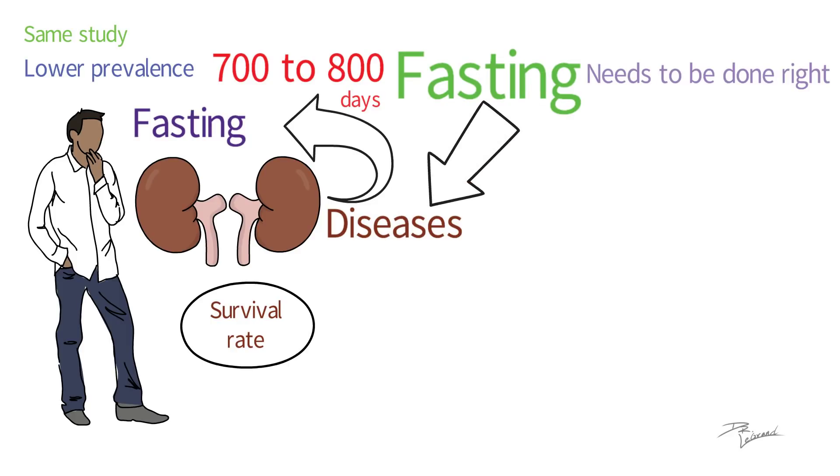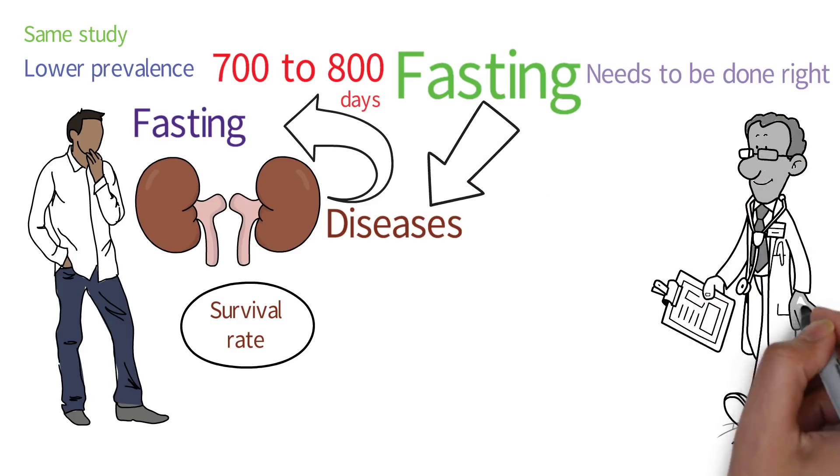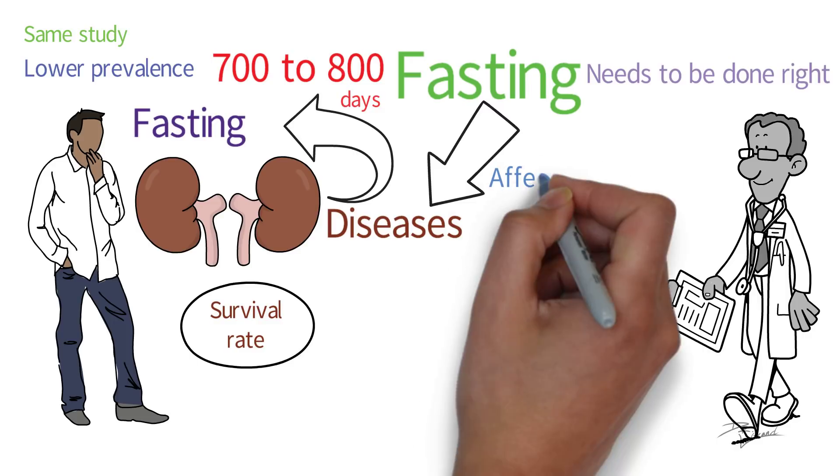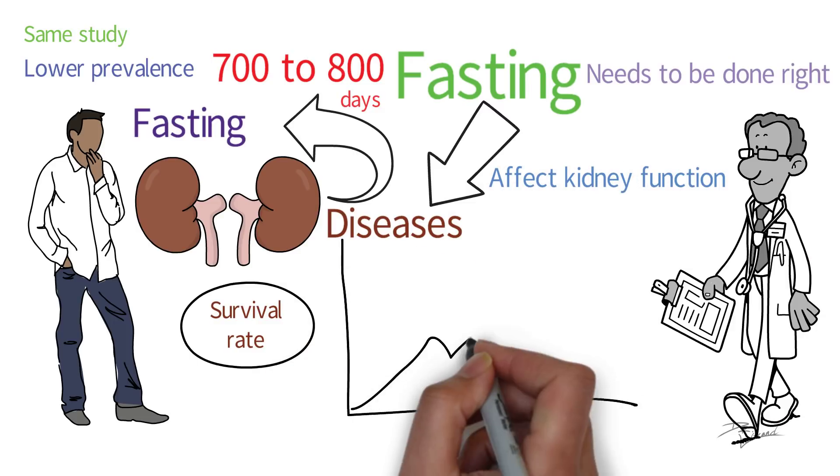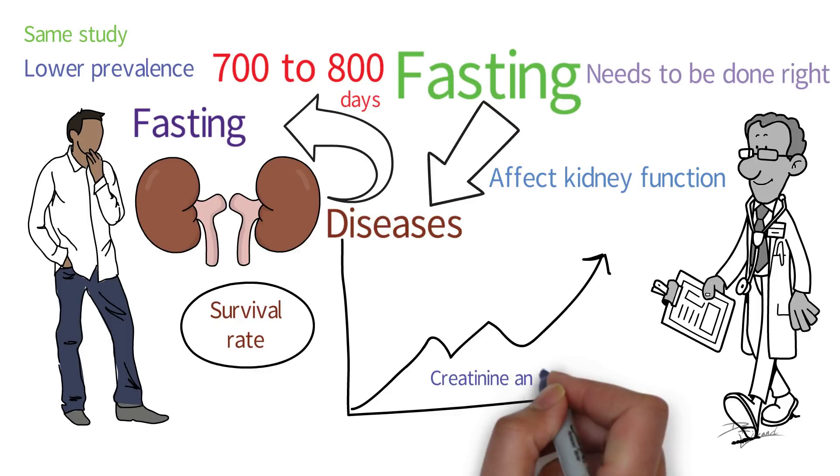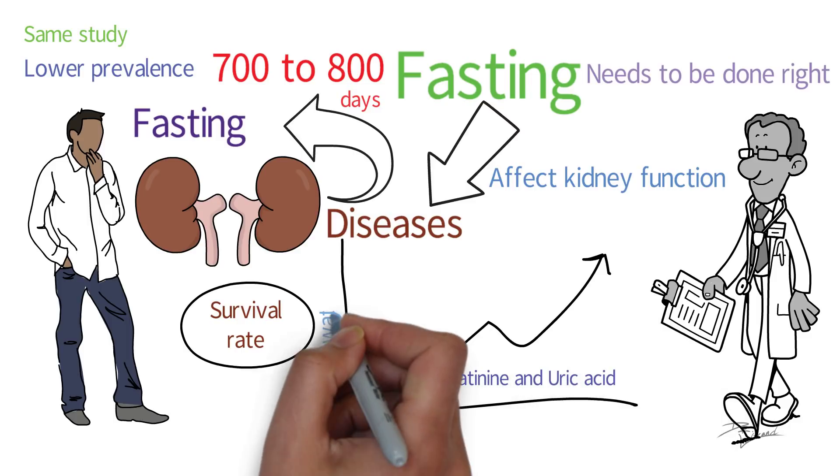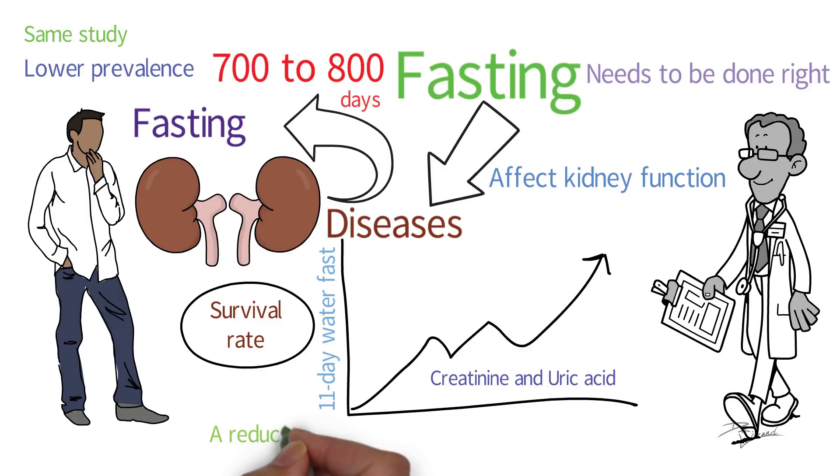In one study, scientists looked at how complete fasting would affect kidney function. There was an increase in creatinine and uric acid levels after an 11-day water fast. A reduction in glomerular filtration rate was also noted.